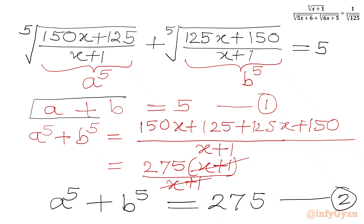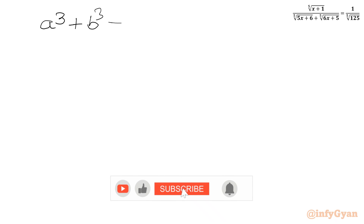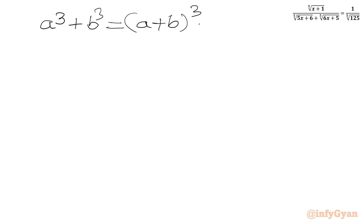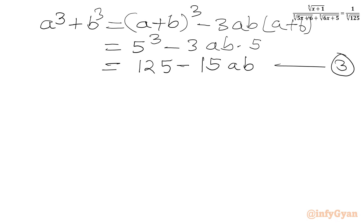Now I will consider equation 1 again and use the algebraic formula: a³ plus b³ equals (a+b)³ minus 3ab(a+b). We know that a plus b equals 5, so we write 5 cubed minus 3ab times 5, which equals 125 minus 15ab. This is our equation number 3, giving us the value of a³ plus b³.